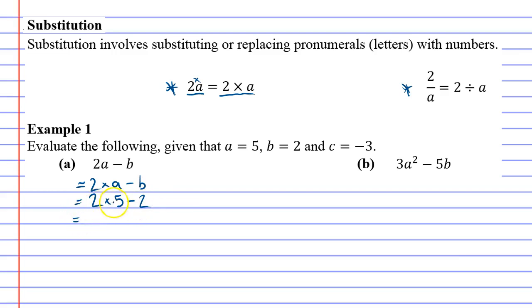Now we can work it out, 2 times 5 is 10 minus 2, 10 minus 2 is 8.